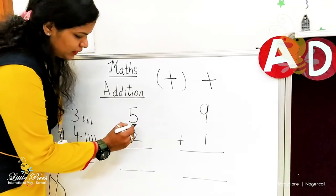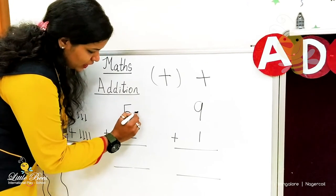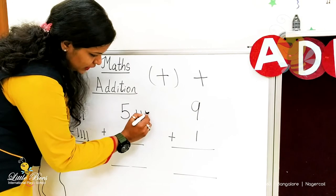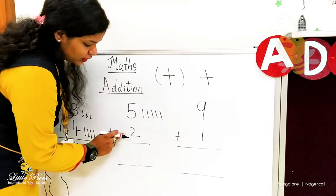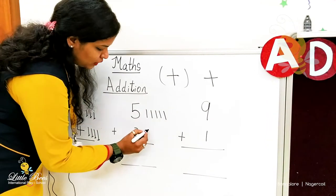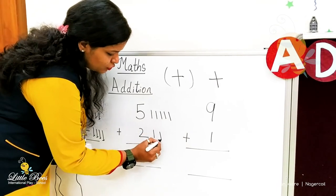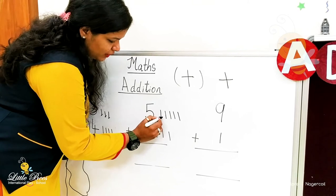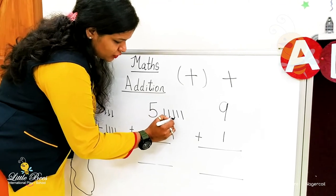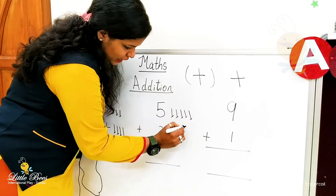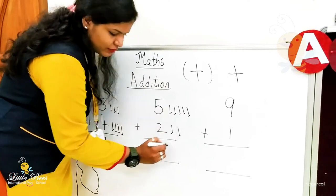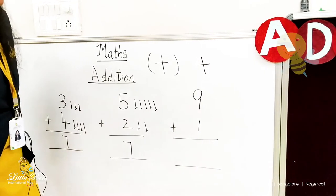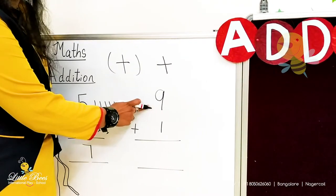Next example, five plus two: I draw five lines — one, two, three, four, five — then two lines — one and two. Let's count all the lines together: one, two, three, four, five, six, seven. Five plus two is equal to seven. Very good!